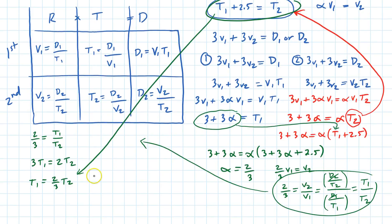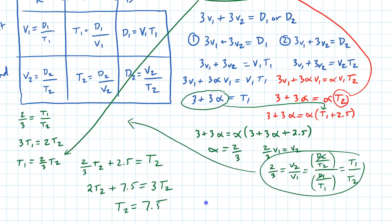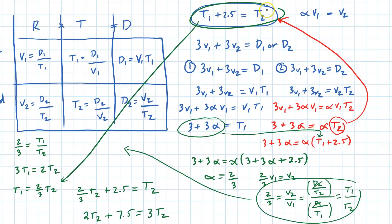So this is going to be two thirds T2 plus 2.5 equals T2. Multiply through by 3, you get 2 T2 plus 7.5 equals 3 T2. So T2 equals 7.5 hours.